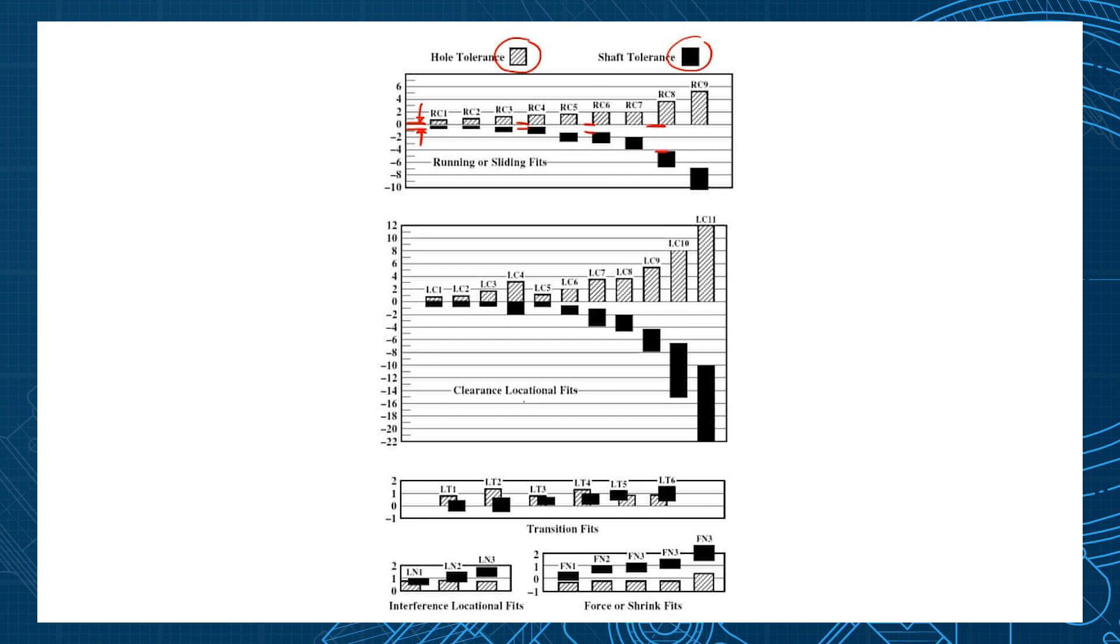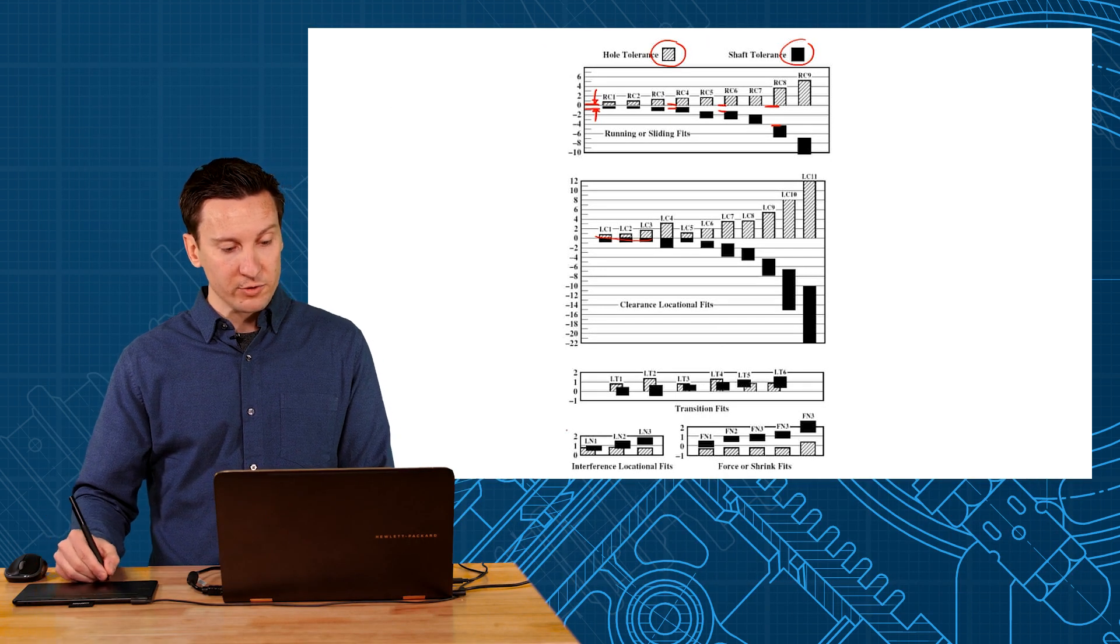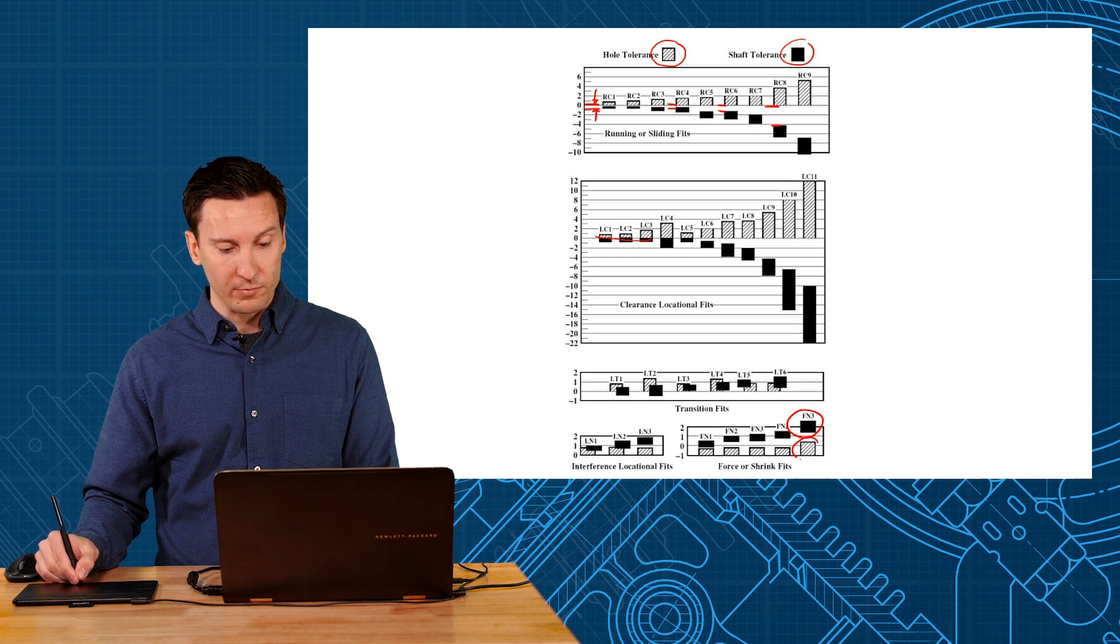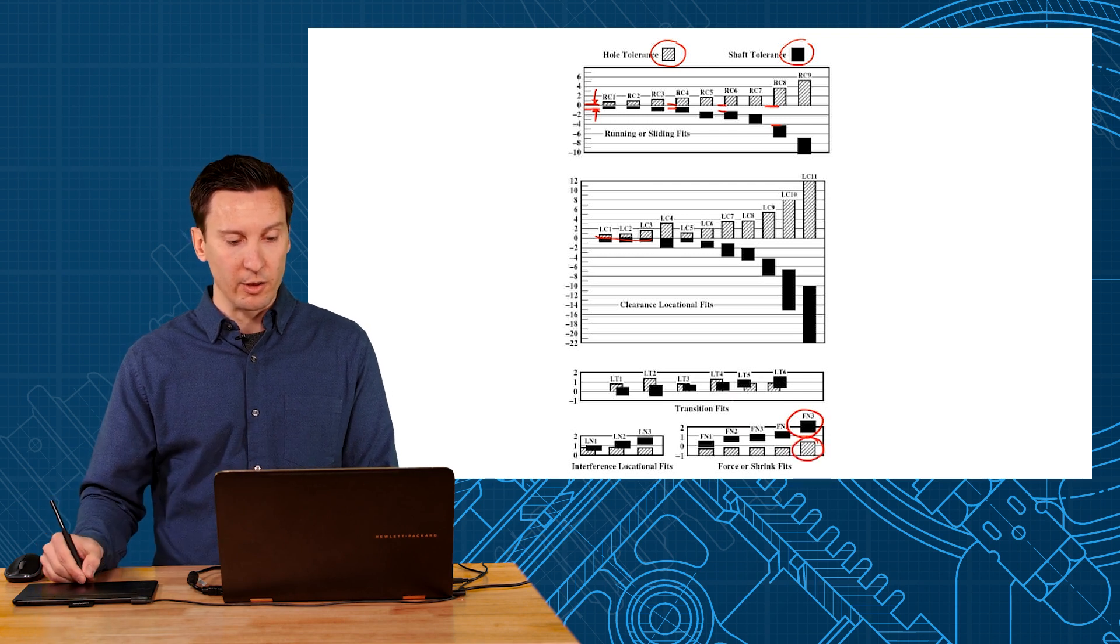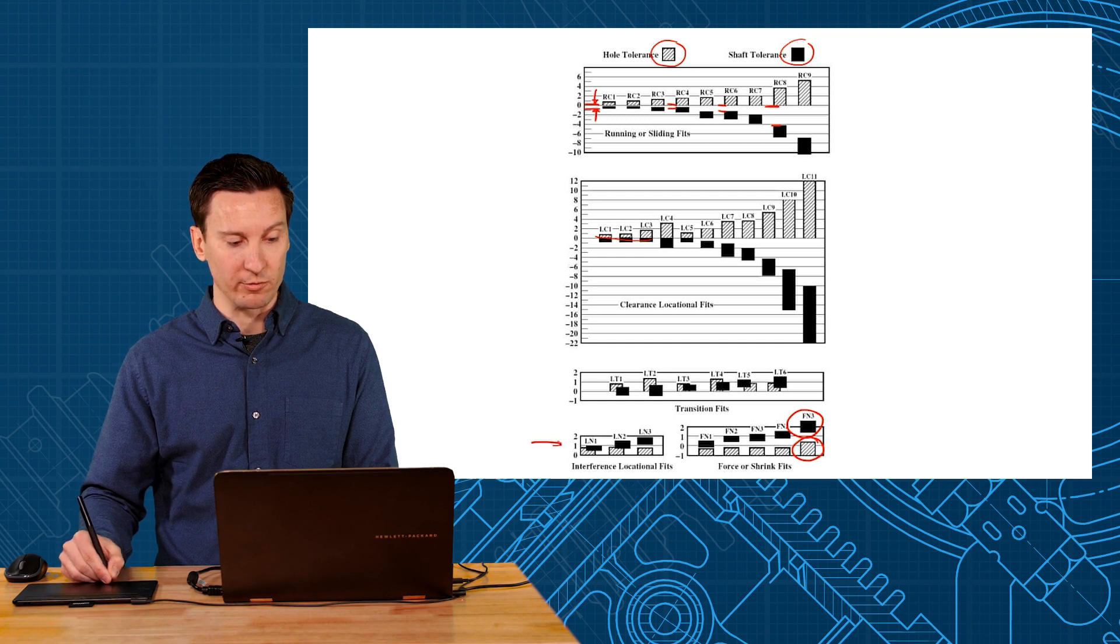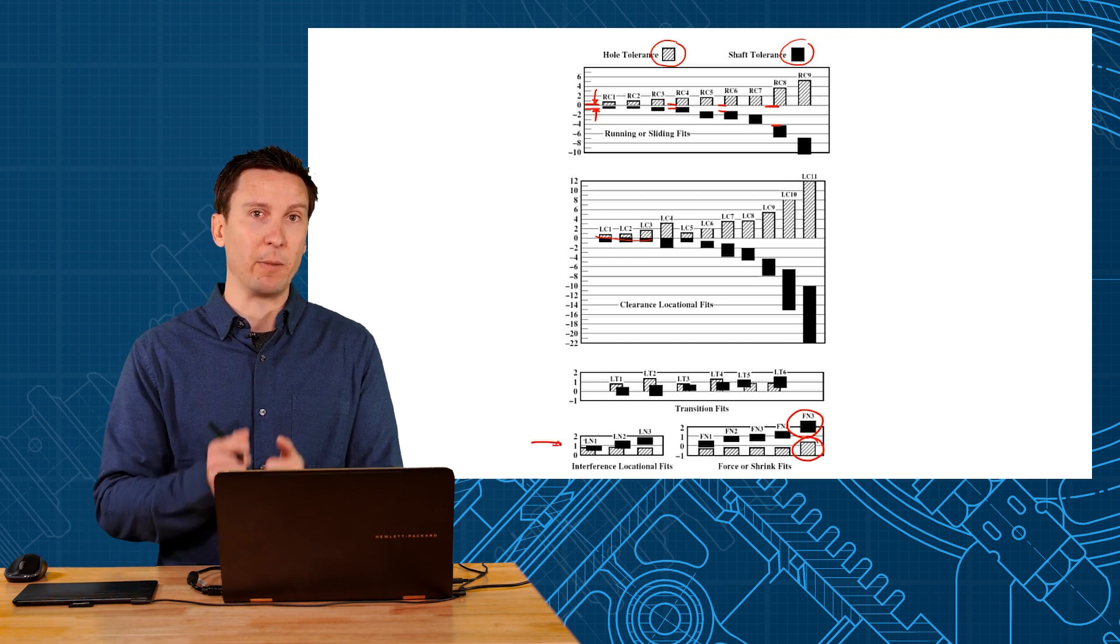Your clearance locational fits, they start off as line-to-line between the pieces for the LC1 through LC5 and then they start getting some positive min clearance to make them easier to assemble. The force fits are going to always be a shaft bigger than the hole and that's so you get that interference fit. The force fits are much heavier bore pressures there than just your locational interference fits with just a pressed in bearing or something.